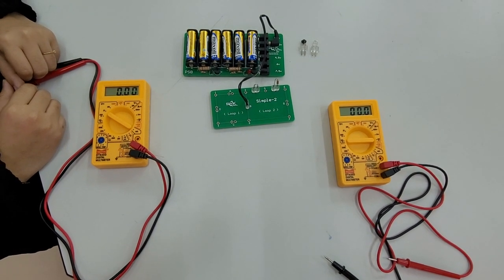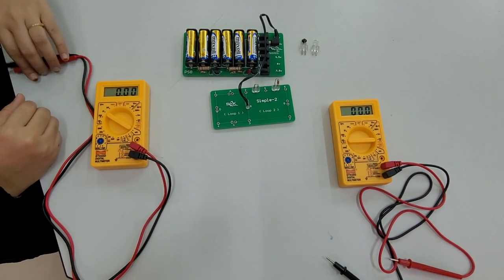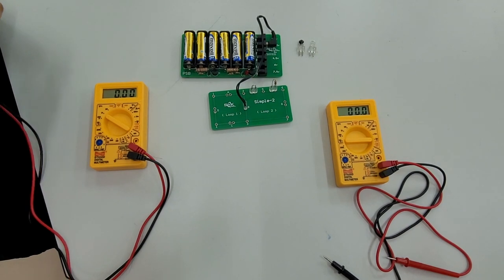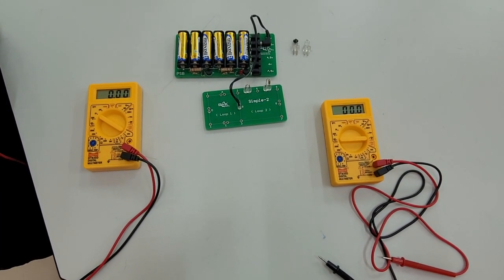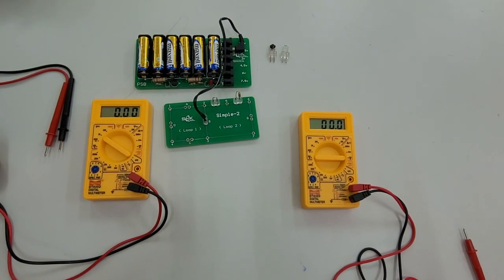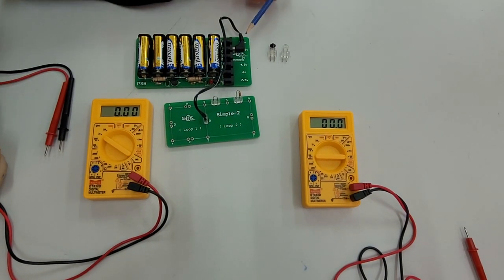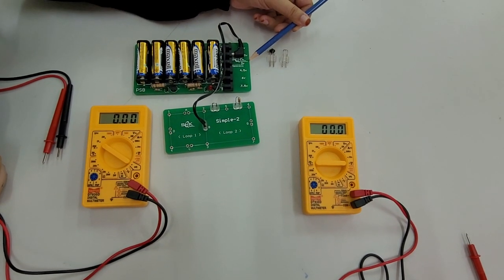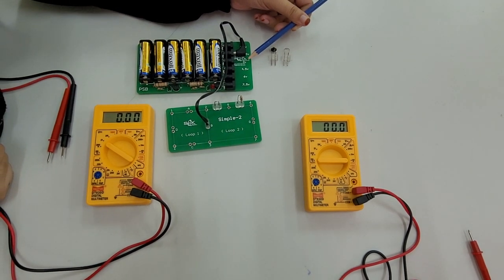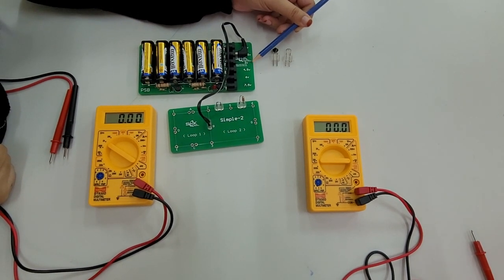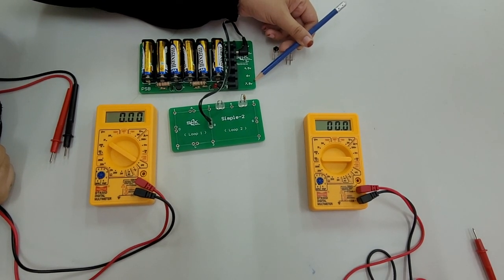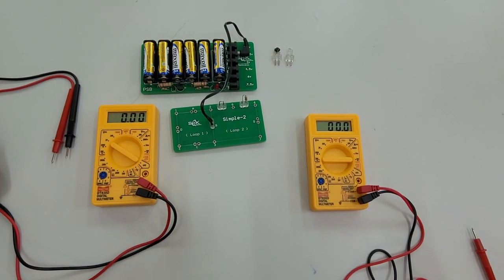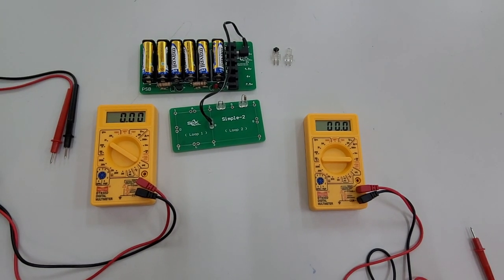Voltmeter has to be connected in parallel and the ammeter has to be connected in series across any circuit. Vary the voltage of PCB board by keeping it at 3V, 4.5V, 6V, and 7.5V to get more readings for the voltmeter.